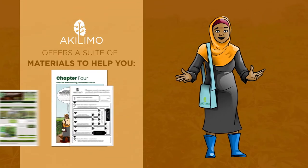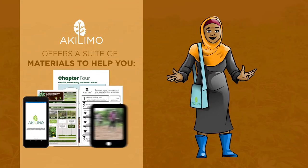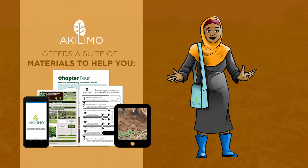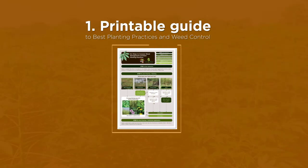Akilimo offers a suite of materials to help you. One: we have a printable guide that takes you through the six steps to best planting practices and weed control.